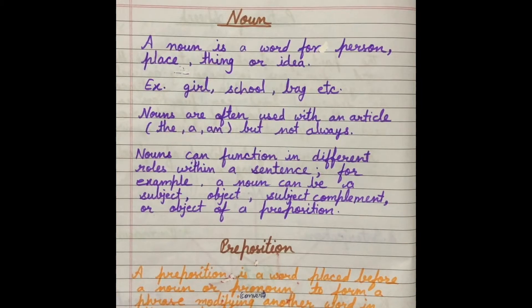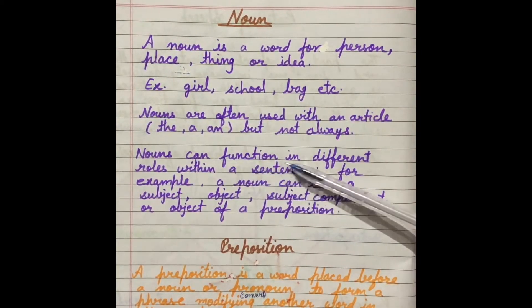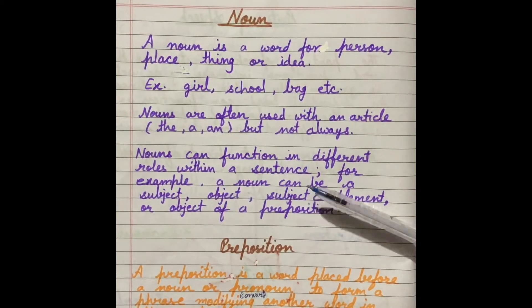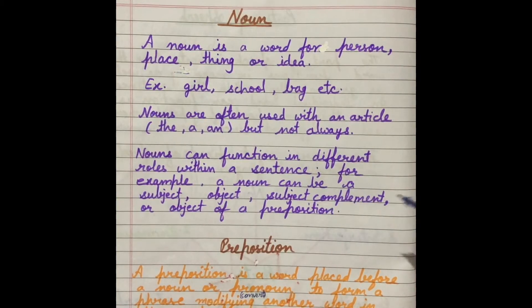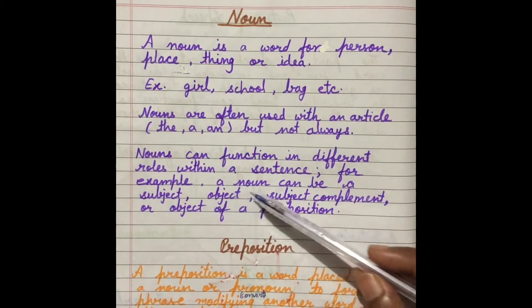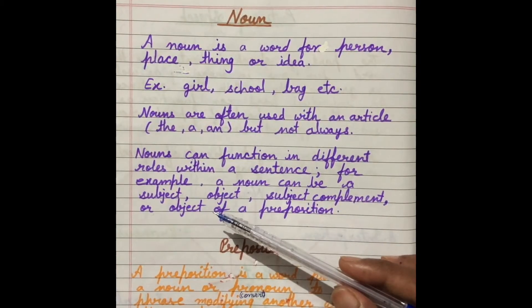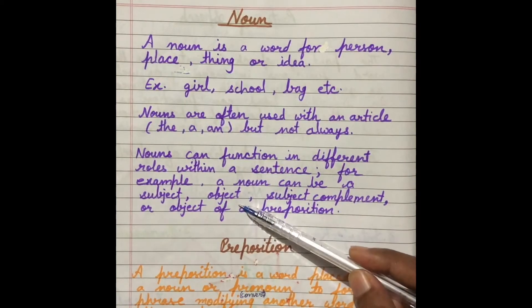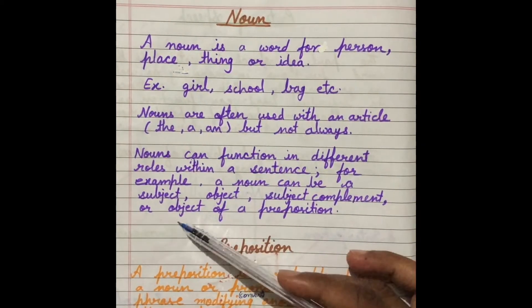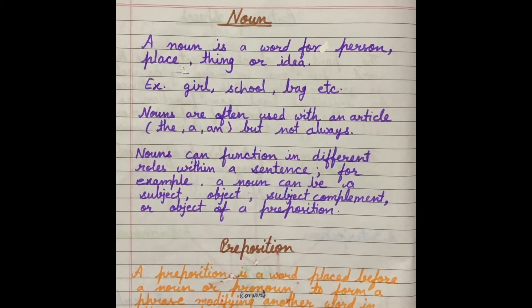Jo noun hoti hai woh aksar 'a', 'an', or 'the' ke saath use ki jaati hai, but not always — kuch exceptions bhi hoti hain. Noun can function in different roles within a sentence. For example, a noun can be a subject, it may be an object, a subject complement, or object of a preposition.